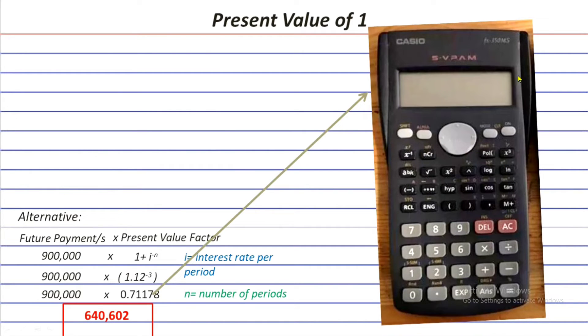It will be very easy if you're using the scientific calculator since you just have to type 1.12 raised to negative 3. This is the symbol for the raised to the power here in the scientific calculator. And if you don't know that yet, then get your scientific calculators and try typing all of this.